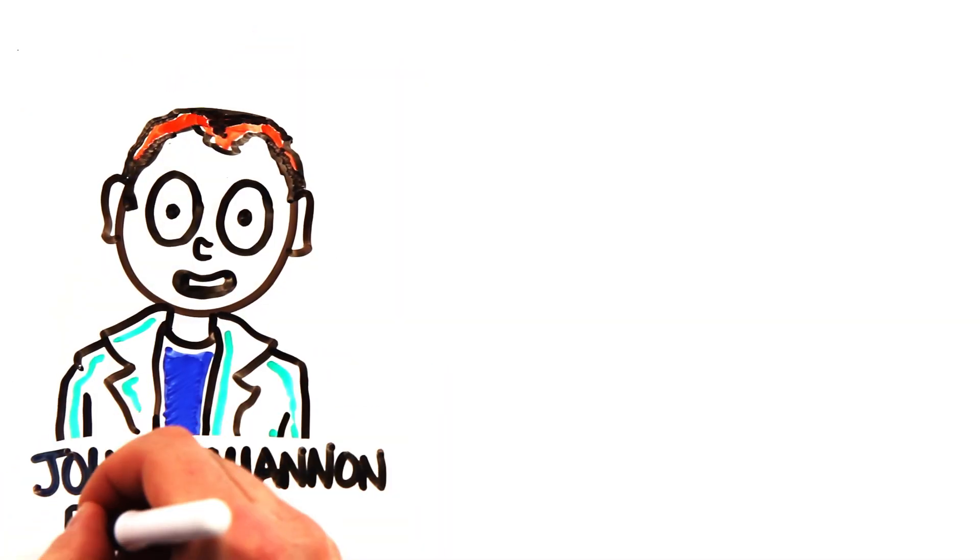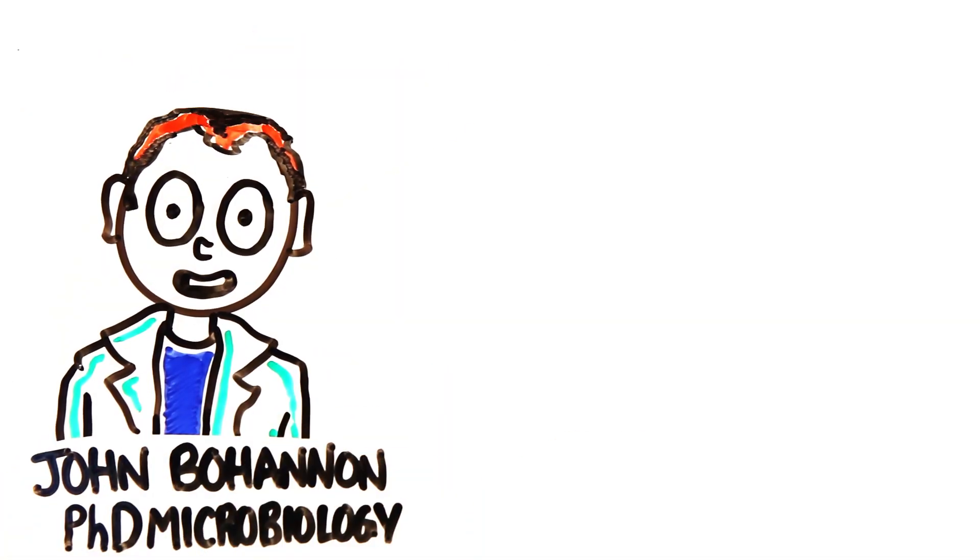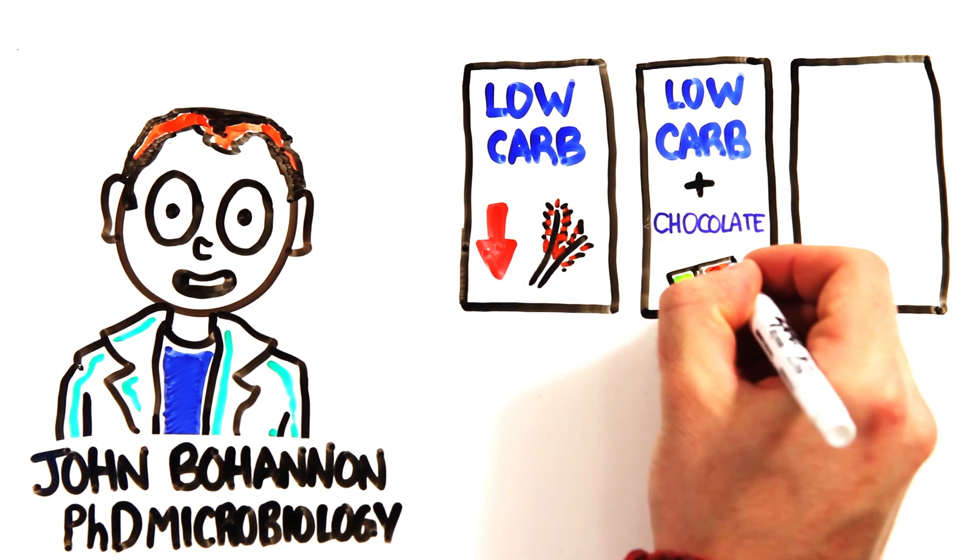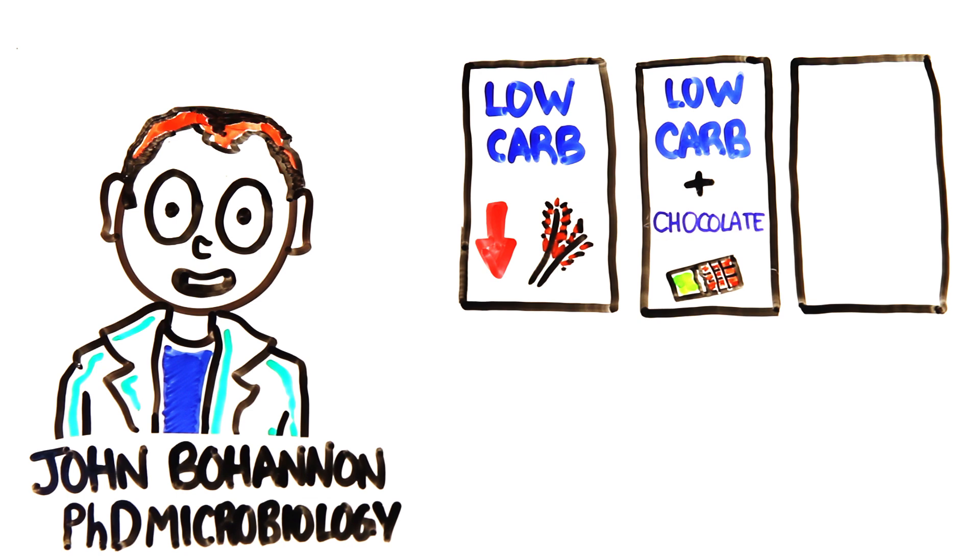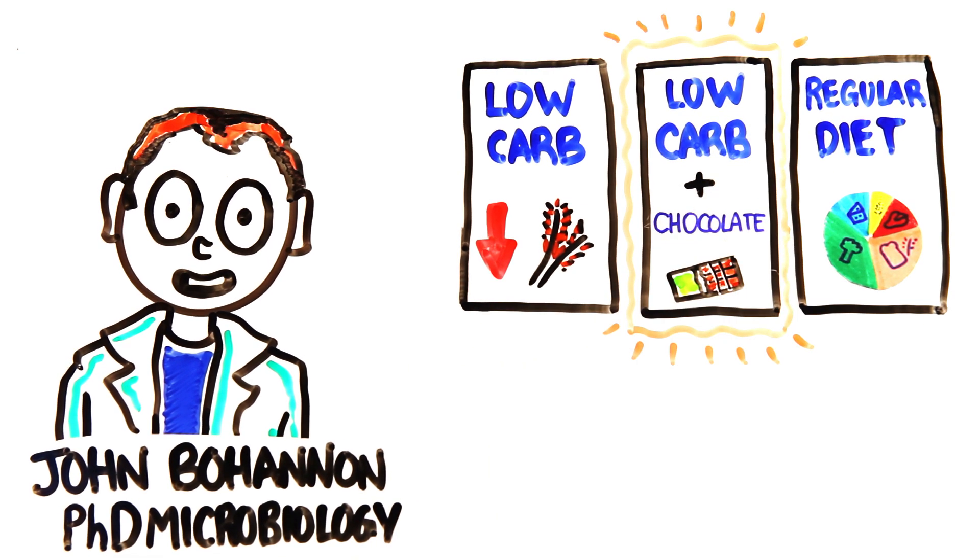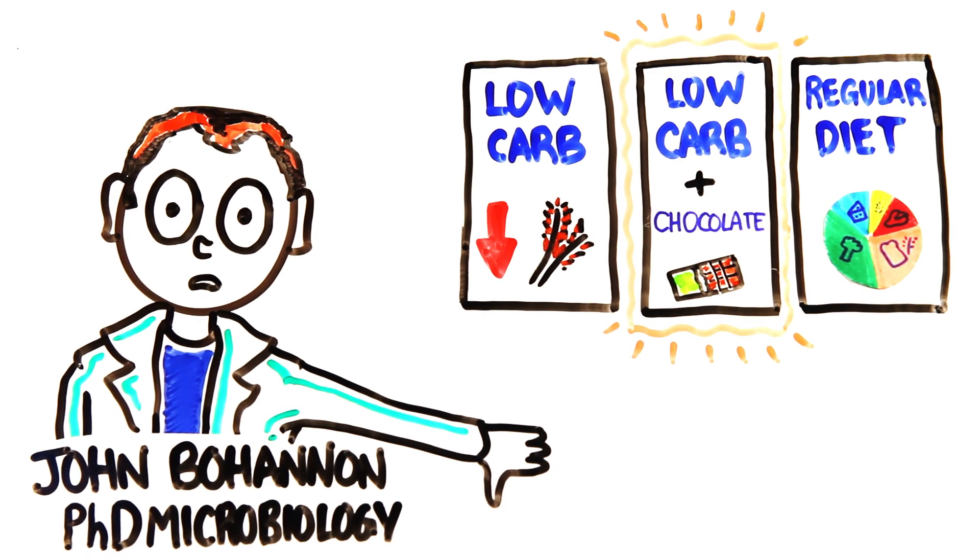A science writer with a Ph.D. in microbiology ran a real clinical trial where participants were assigned to three groups: a low-carb diet, a low-carb diet plus a 1.5-ounce chocolate bar, and a group that maintained their regular diet. At the end of three weeks, the chocolate group did lose the most weight, but the journalist consciously used terrible science.